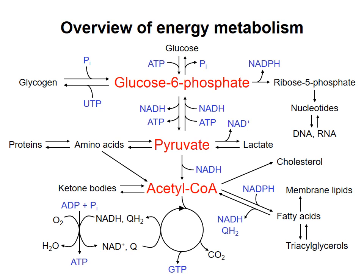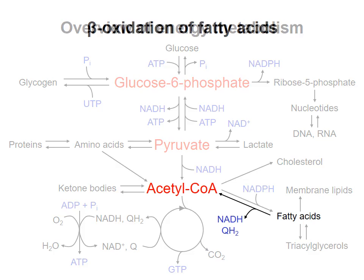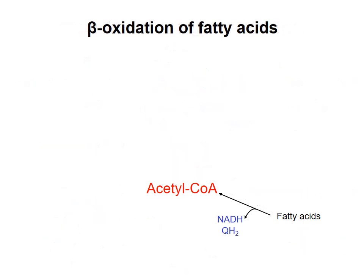In the last video, I talked about how triacylglycerols are broken down to provide fatty acids. In this video, I'll describe how fatty acids are converted to acetyl-CoA in an oxidative process that produces the reduced electron carriers NADH and QH2.